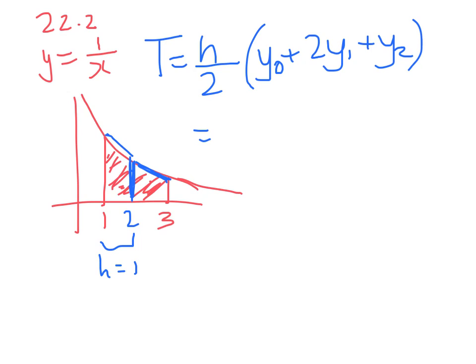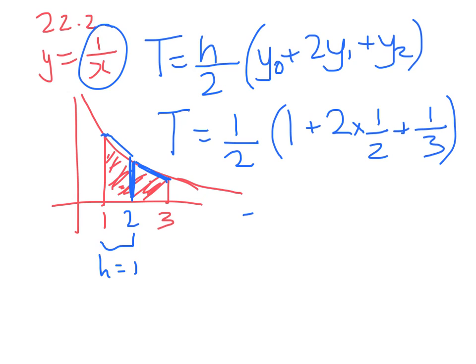So, in this case, my approximate area from the trapezium rule is going to be 1 half times, well, here we've got the first y value, so that's 1 over 1, which is 1, plus 2 times 1 over 2, plus 1 lot of 1 third. And that gives me 1 half times 1 and another 1 and 1 third, so 7 thirds. So, that gives me an approximate answer of 7 sixths.